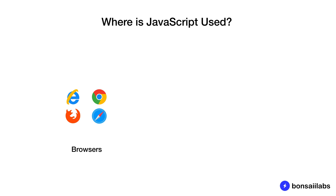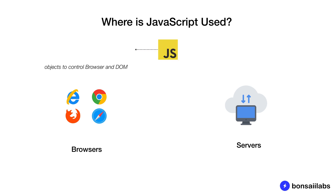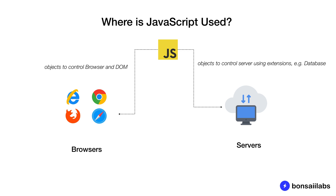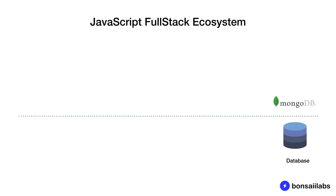It is available as the backend language to develop server-side applications. On browsers, client-side JavaScript extends the core language by supplying objects to control the browser and the DOM — the Document Object Model. On servers, server-side JavaScript extends the core language by supplying objects relevant to running JavaScript on the server. For example, server-side extensions allow an application to communicate with a database or perform file I/O operations.